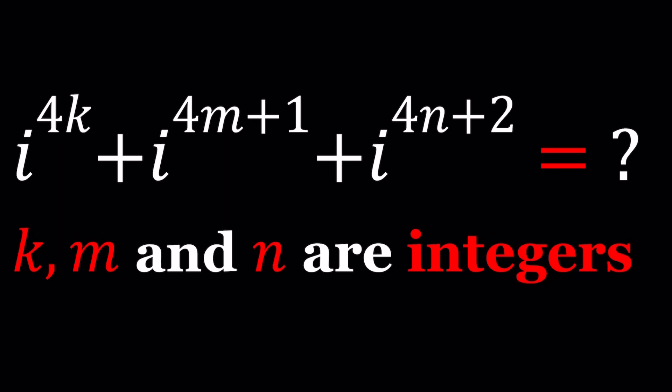So we have i to the power 4k plus i to the power 4m plus 1 plus i to the power 4n plus 2. k, m, and n are integers.